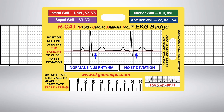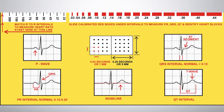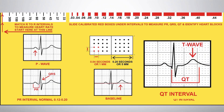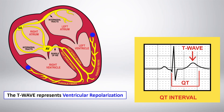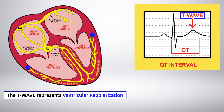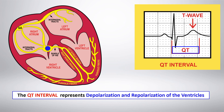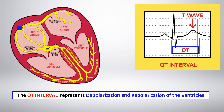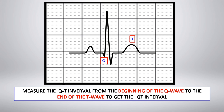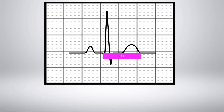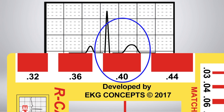With all of its precision measurement capabilities, the EKG badge is the ideal tool for both EKG rhythm strips and 12-lead EKG interpretation. The T wave represents ventricular repolarization. The QT interval represents depolarization and repolarization of the ventricles. Measure the QT interval from the beginning of the Q wave to the end of the T wave. Using the calibrated red boxes on the EKG badge, you can see a QT interval of 0.40.